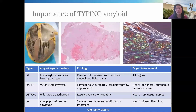Once you identify that there is a presence of amyloid, it's important to go ahead and get typing done — whether that's by mass spectrometry, immunoelectron microscopy, or even immunohistochemistry — to really identify what type of amyloid it is, as this will affect prognosis, treatment, and further workup.